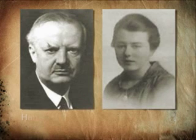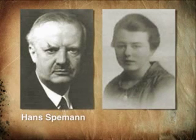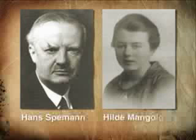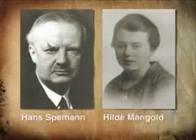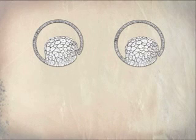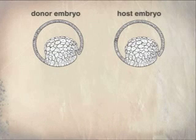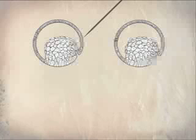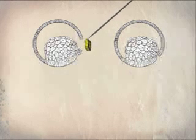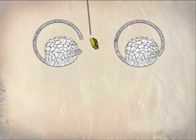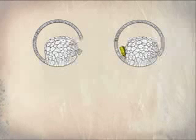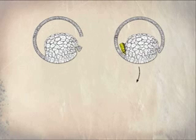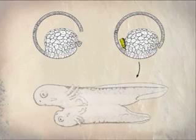Hans Speemann and Hilde Mangold were pioneers of developmental biology. They showed how the pattern of the embryo is created by interactions between one group of cells and another. In 1924, they made a famous discovery: a small piece of tissue called the organizer, taken from a specific site in the early frog embryo and transplanted to another embryo, could control the behavior of neighboring cells and direct the formation of an entire body axis.